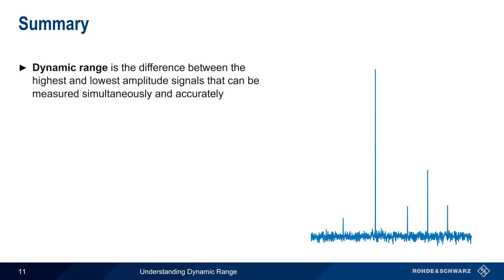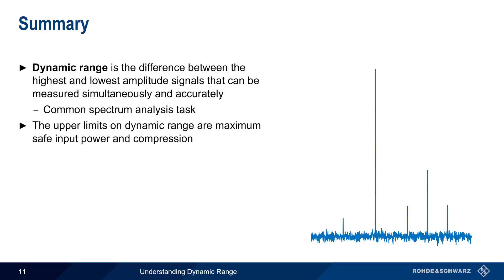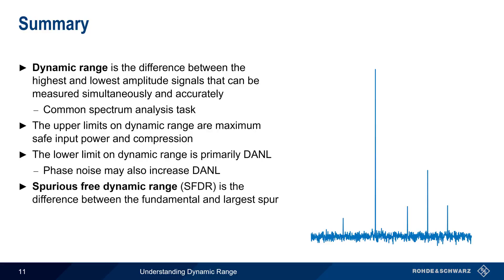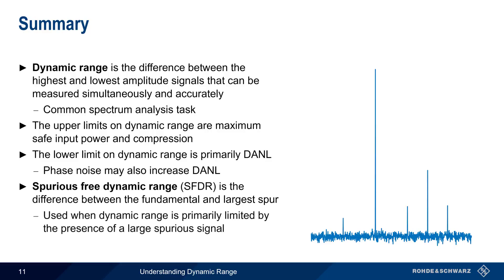Let's end with a brief summary. Dynamic range in a spectrum analyzer is defined as the difference in dB between the highest and lowest amplitude signals that can be measured accurately and simultaneously. This is a common task in spectral analysis, and therefore dynamic range is an important figure of merit for spectrum analyzers. On the upper end, dynamic range is limited both by maximum safe input power, as well as by compression, which reduces amplitude accuracy. On the lower end, dynamic range is limited by the analyzer's noise floor, or DANL, which represents the minimum signal amplitude that can be measured. Note too that the presence of phase noise may also increase DANL in some cases. A special case of dynamic range is spurious-free dynamic range, which is the difference in amplitude between a fundamental signal or carrier and the largest spurious signal. Spurious-free dynamic range is measured in units of dBc, and is most often used when dynamic range is limited by the presence of a large spurious signal, rather than by noise or compression.